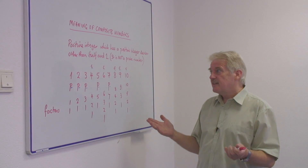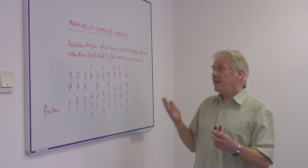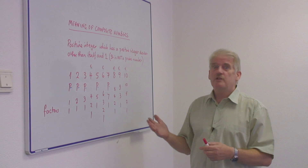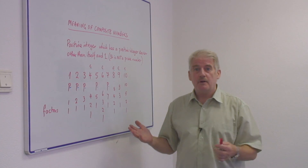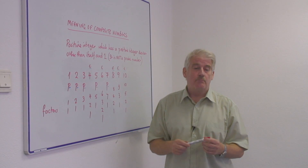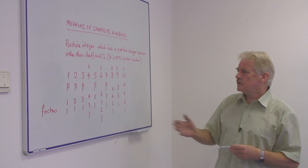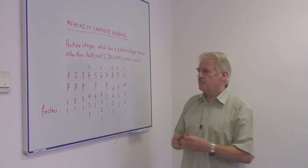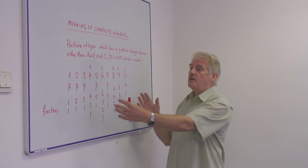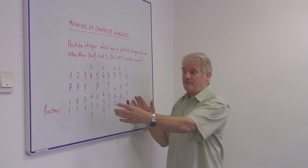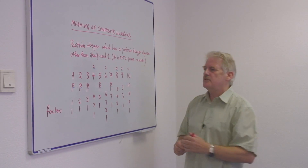In fact, it is any number which isn't a prime number. That is, most numbers are composite numbers. Looking at the first ten numbers, there are a lot of prime numbers in the first ten numbers.